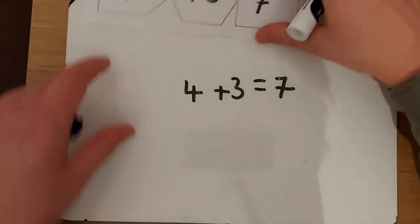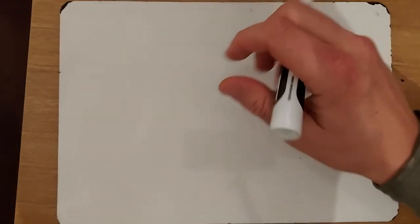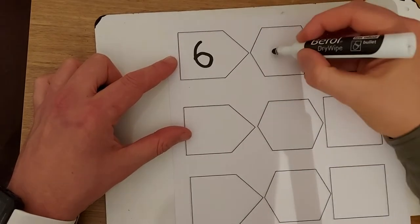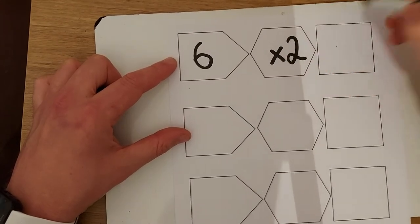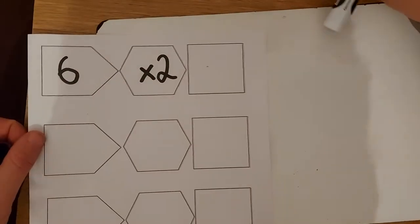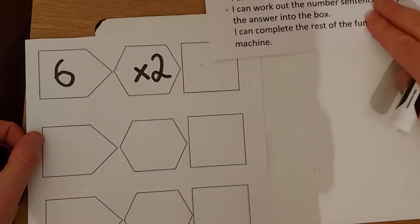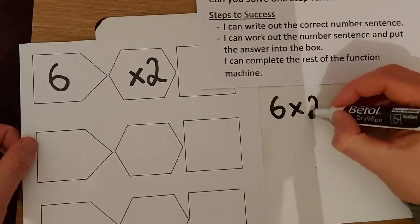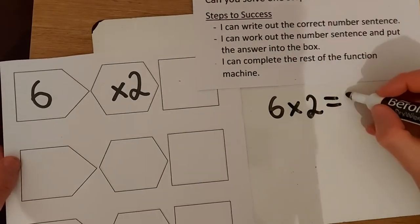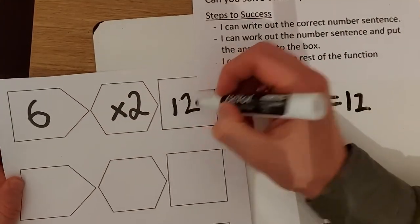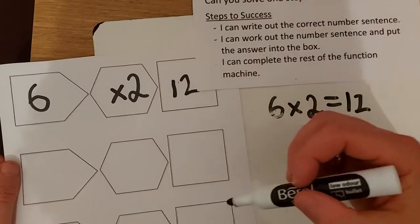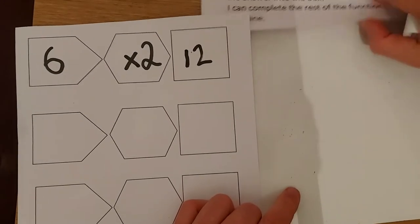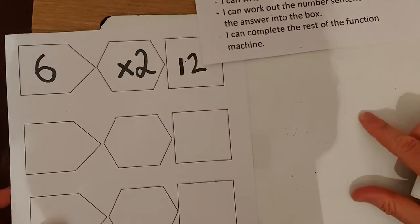Let's look at another example. We could have 6 here times 2. Let's run through those steps to success again. I can write out the correct number sentence, so the number sentence here would be 6 times 2. I can work it out, which would be 12, and then I could write it in and then complete this function machine. Like I say, there should be another three more. Let's do another one. I'm hoping you're seeing how simple this is. This is building you up for having a go at the trickier one.